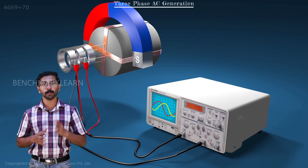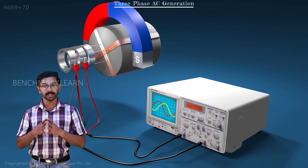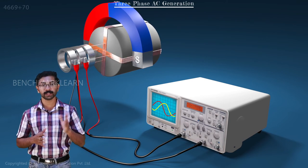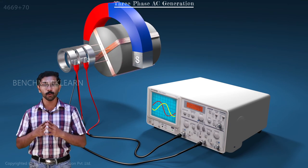EMF will be generated in both the coils. This will also be an AC with the same frequency as the first case. But there will be a phase difference between the two voltages.